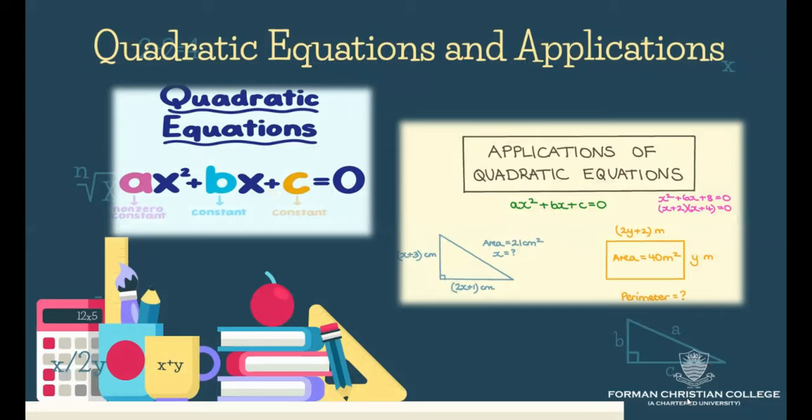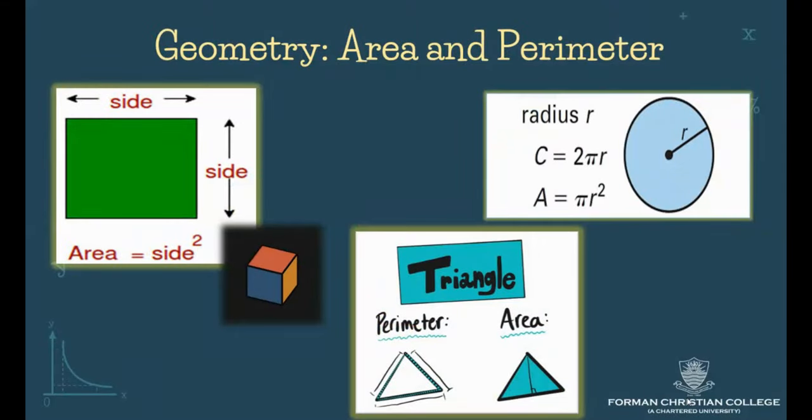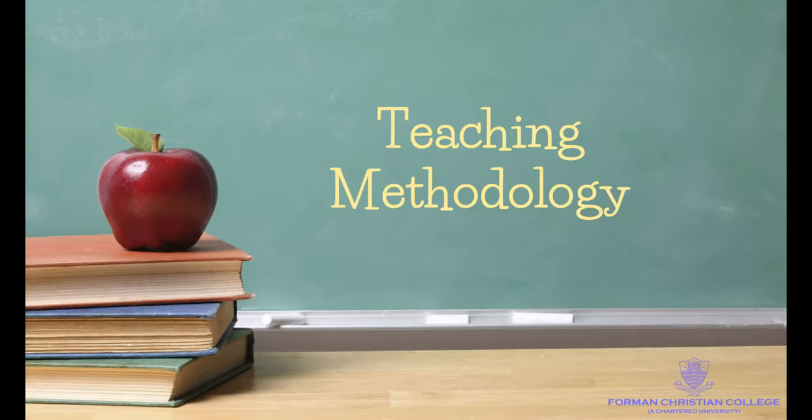Distance, speed, and time problems. Geometry: in this part we will discuss the area and perimeter of different geometrical shapes like circle, square, rectangle, triangle, trapezium, parallelogram, and then area of shaded regions.